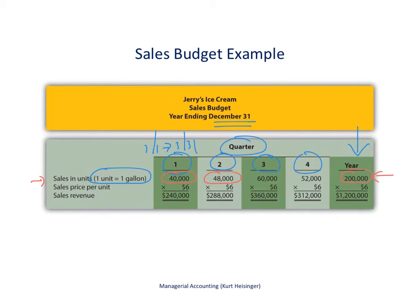For the year collectively, we expect to sell 200,000 units. The second line gives us the expected sales price per unit of $6. The third line calculates sales revenue for each quarter by multiplying units by the sales price per unit. For the first quarter, that gives us sales revenue of $240,000. The far right column represents total annual sales revenue, which is the sum of all four quarters — $1.2 million. This is what a typical sales budget looks like.